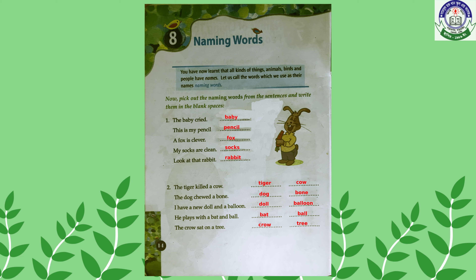And the last one: 'Look at that rabbit' — the naming word is rabbit, so write rabbit in the blank space. Number two: 'The tiger killed a cow' — here we find two naming words: tiger and cow. 'The dog chewed a bone' — two naming words: dog and bone. 'I have a new doll' — two naming words: doll and balloon. 'He plays with a bat and a ball' — two naming words: bat and ball. 'The crow sat on a tree' — two naming words: crow and tree.